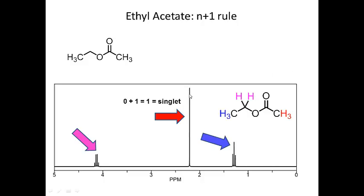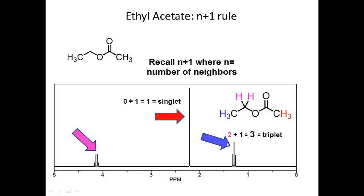Applying the N plus one rule: the red set of protons has no neighboring protons on the adjacent carbon, so N equals zero; zero plus one equals one — it shows up as a singlet. The blue set of protons has two neighboring protons on the adjacent carbon, so N is two; two plus one is three — that becomes a triplet. The pink set of protons has three neighbors on one side and none on the other, so N is three; three plus one is four — the signal splits into a quartet.